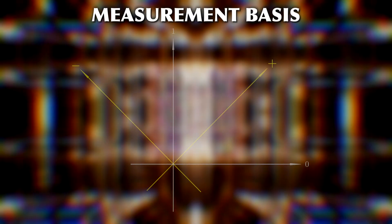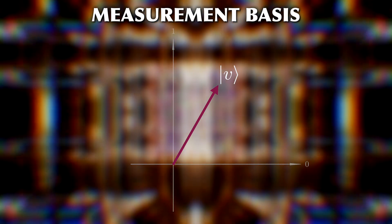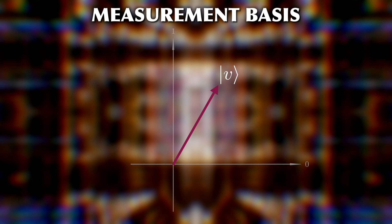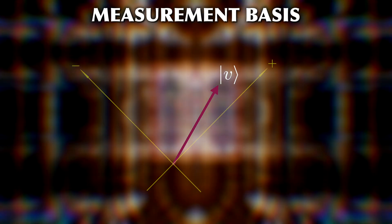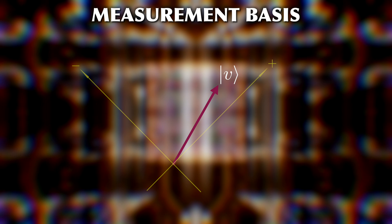Also, any measurement can only be performed in a specific basis. If you measure a qubit in a Z basis, you only get the zero or one status outcome. When you measure it in the X basis, you can only get the plus or minus states, etc.